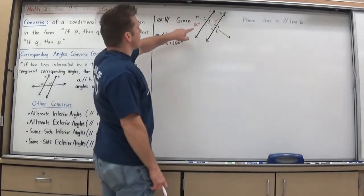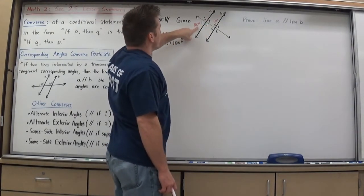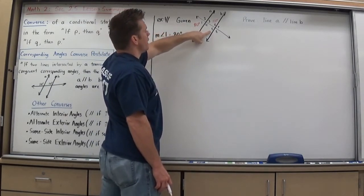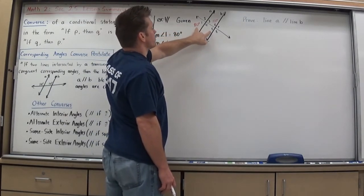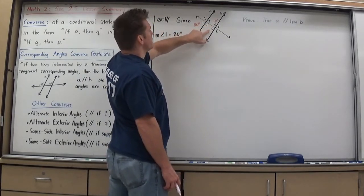If I can somehow get some corresponding angles to be congruent, I'd be good. So I could potentially, if I can prove five is 80 degrees, I could do the corresponding angles converse. I could find that five is 80 doing a linear pair. So that's actually pretty easy.